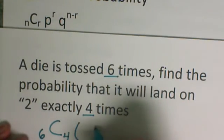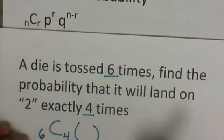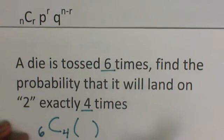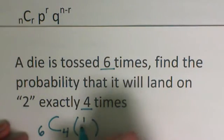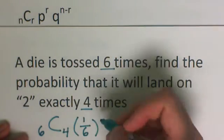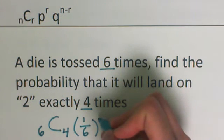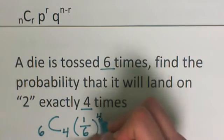Next, I like to use a parenthesis for the probability that it will land on a 2. For a die, that's 1 out of the 6 sides. And then up here goes this number, the r, how many we want. So I want it to land on the 2 four times.